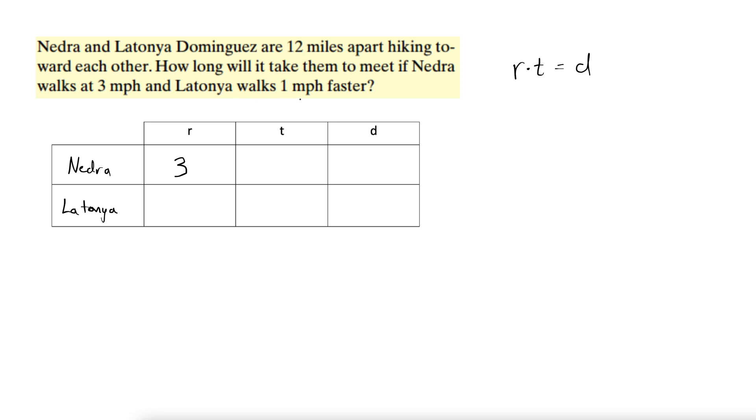And LaTanya walks one mile per hour faster. So they're trying to get a little fancy on us here, but don't be taken aback by that. Three miles per hour, one mile per hour faster is just four miles per hour. Three plus one, four.